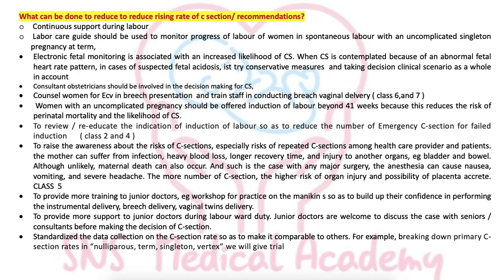Recommendations to reduce the rising rate of C-section: First, continuous support during labour using the labour care guide should be used to monitor progress of labour in women in spontaneous labour with an uncomplicated singleton term pregnancy. Electronic fetal monitoring is associated with increased likelihood of C-section rate, so when C-section is contemplated because of an abnormal fetal heart rate pattern or abnormal CTG, first try conservative measures: left lateral repositioning, IV fluids, stop syntocinon, and fetal scalp stimulation — taking the whole clinical scenario including risk factors and CTG into account before deciding on C-section.